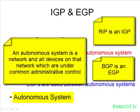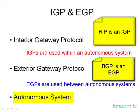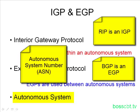Autonomous systems are sometimes assigned numbers, called an autonomous system number. These are assigned by ICANN, the Internet Corporation for Assigned Network Numbers, and it's a way to identify a network. ASNs are also used by BGP for loop avoidance.